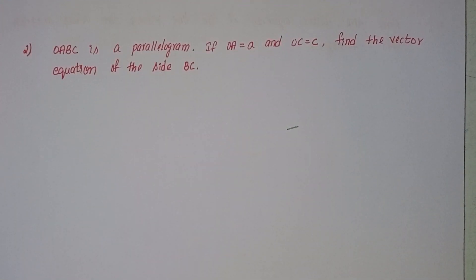Welcome back to our channel. Today we will discuss intermediate first year 1a chapter 4 vectors exercise 4b second problem. ABCD is a parallelogram. If OA equals a and OC equals c, find the